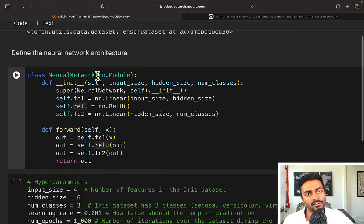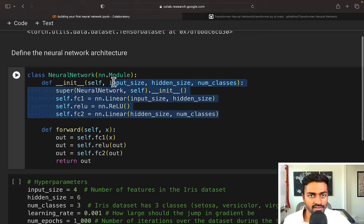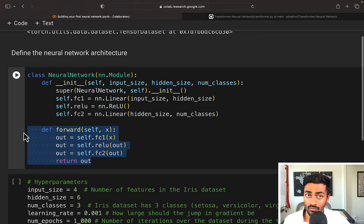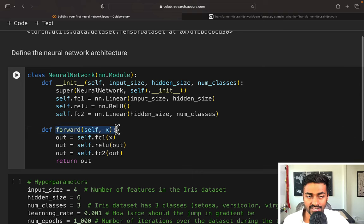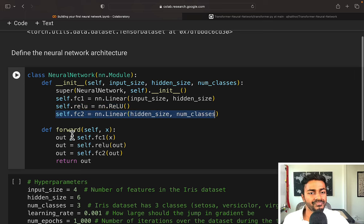So in order to create a neural network, we first need to extend the class TorchNN module. And we will then override the constructor function, as well as a function called forward. This will define the forward pass. So in the constructor, we're going to define individual components of our neural network. So we define the first layer, the activation, in this case we're using ReLU, and then the output layer. And for the forward pass, we basically take our input x, we pass it into the first layer, then pass it into the ReLU layer, pass it into the second forward layer, and then we have the output here.